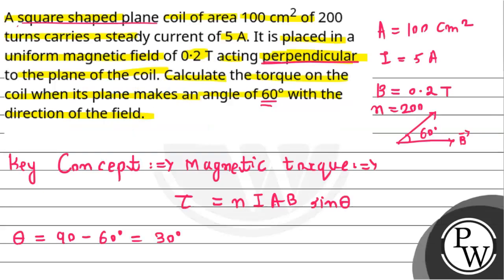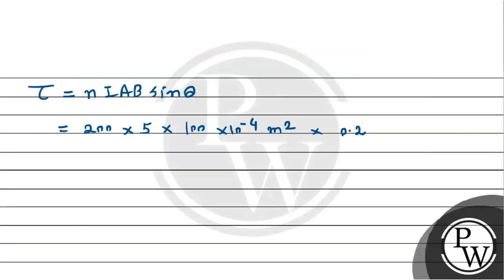So just need to apply the formula so that we can calculate the torque here. So τ will be equals to N, I, A, B, sine of θ. This is equal to number of turns 200, current is 5A, area is 100 cm square, converting to meter square, so we'll multiply by 10 to the power minus 4, it becomes meter square, multiply, magnetic field is given 0.2, multiplying, sine of 30.